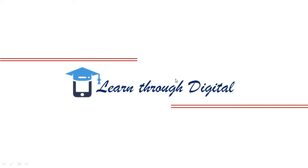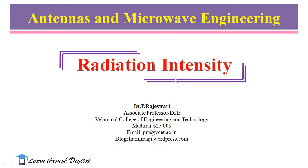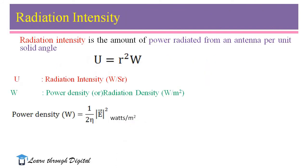Dear learners, in this video I will explain the antenna parameter radiation intensity. Radiation intensity is the amount of power radiated from an antenna per unit solid angle. It is denoted by the capital letter U. U is equal to R squared times W, where W is power density or radiation density. The unit for radiation intensity is watts per steradian.